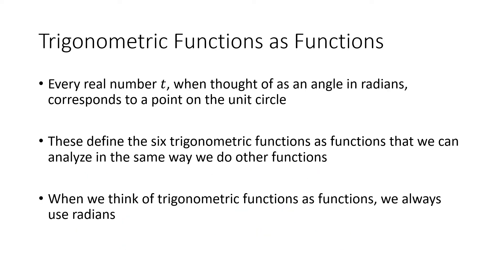Now let's think about these trigonometric functions as actual functions. We want to think about what kind of properties these functions have. Every real number corresponds to a point on the unit circle, so we can define the six trigonometric functions as functions of that value. When we do this, we always want to use radians for our angles — there's a specific reason relating to calculus, so we think about these only in terms of radians.